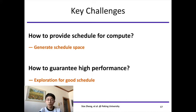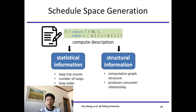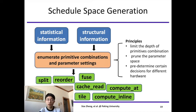The key challenges of FlexTensor are how to provide schedule for compute and how to guarantee high performance. We propose two solutions. The first is to enumerate possible schedule primitive combinations and parameter settings for given compute description. The second is to use effective exploration with heuristic and machine learning. For schedule space generation, we first use static analysis to get the statistical information as well as structural information. Statistical information includes loop trip counts, number of loops, loop order, and so on. Structural information includes computation graph structure, producer-consumer relationship, and so on. The information is used to enumerate possible primitive combinations and parameter settings. Different primitives such as split, reorder, and fuse are combined to produce possible schedule configurations, but this space is very large.